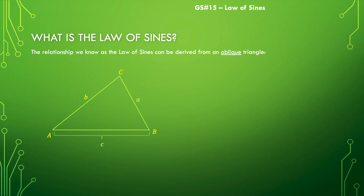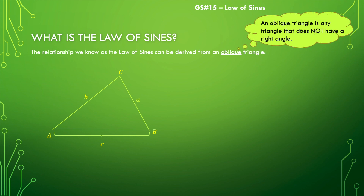What is the law of signs? Well, the relationship we know as the law of signs can be derived from an oblique triangle. Oblique is kind of a funny word — it has nothing to do with six-pack abs. It really just means a triangle that does not have a right angle. So it's a class of triangle; anything that is not a right triangle is classified as an oblique triangle.